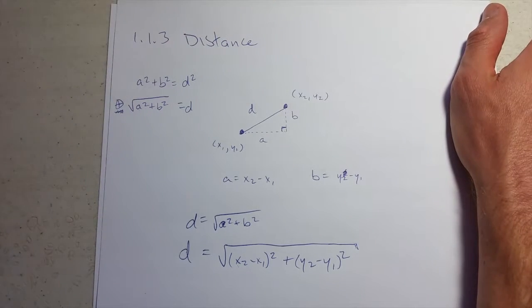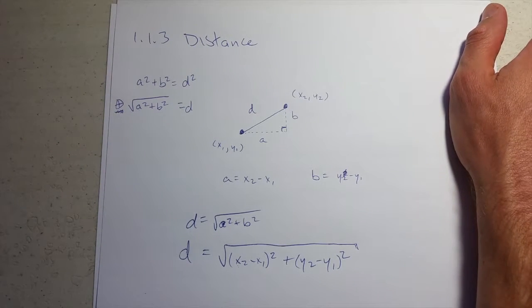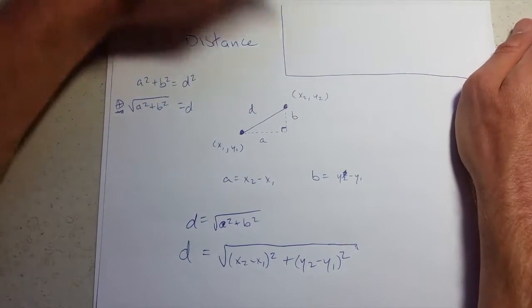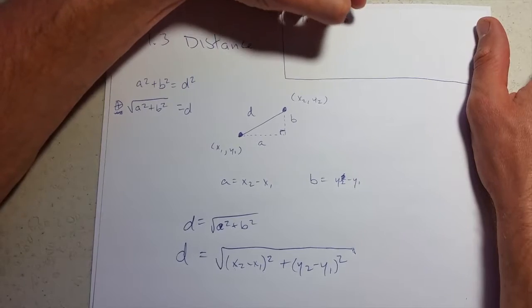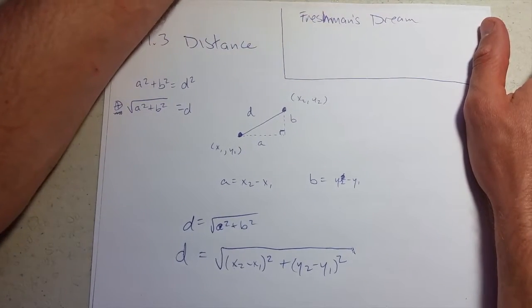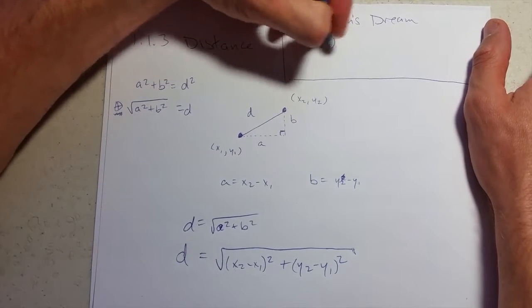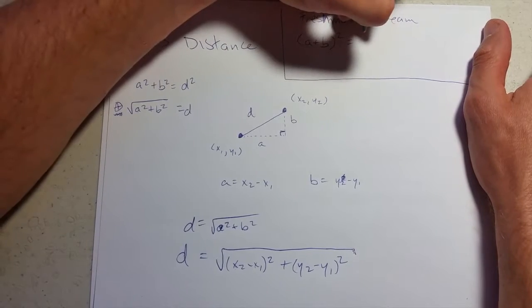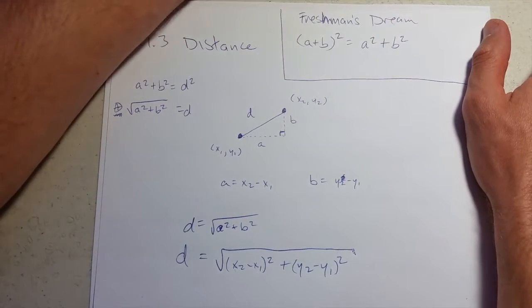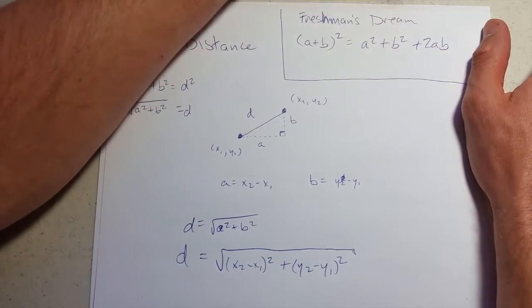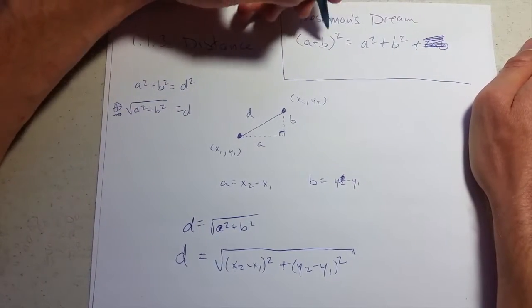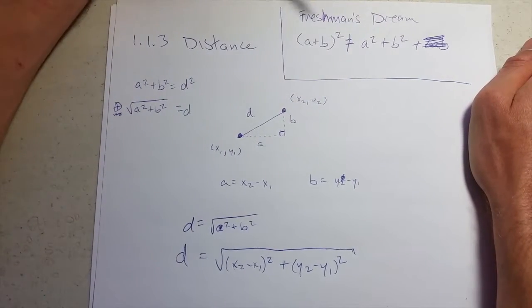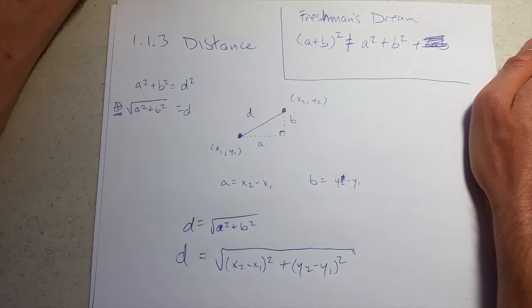Now is a good time to talk about what not to do. So this is bad habits hopefully will be breaking here. And this is called the freshman's dream. And what is this? a plus b squared is a squared plus b squared plus 2ab. Now in the freshman's dream, the 2ab is not there. What that means is this is no longer equal. So freshman's dream, you cannot take a power and distribute to the a and the b. So a plus b squared is not a squared plus b squared.